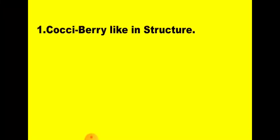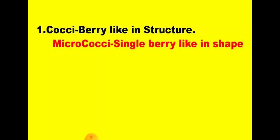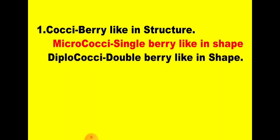The first type based on shape is cocci — the word cocci means like a berry in structure. Cocci bacteria look like a berry in their shape. There are different types of cocci bacteria: micrococci, which means single berry-like bacteria in shape, and diplococci, which means double berry-like bacteria.